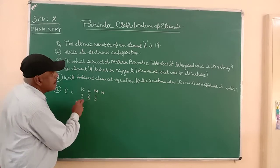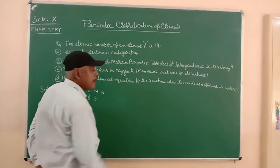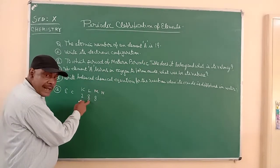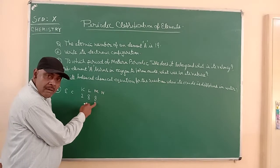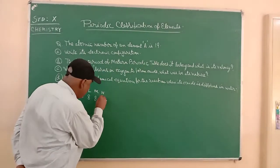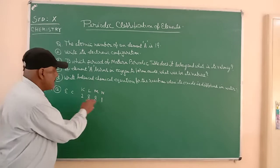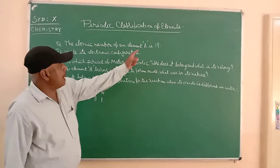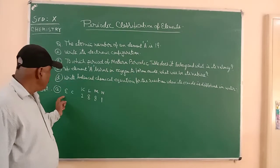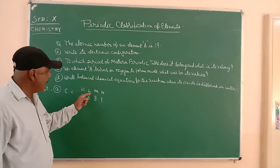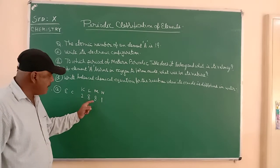Now what is remaining behind? The atomic number is 19, so 2, 8, and 8 equals 18. Remaining behind is only one electron. This is the electronic configuration for atomic number 19: K, L, M, N equals 2, 8, 8, 1.